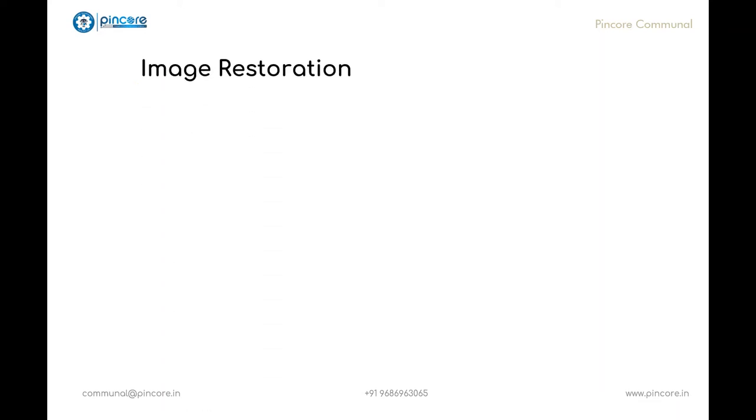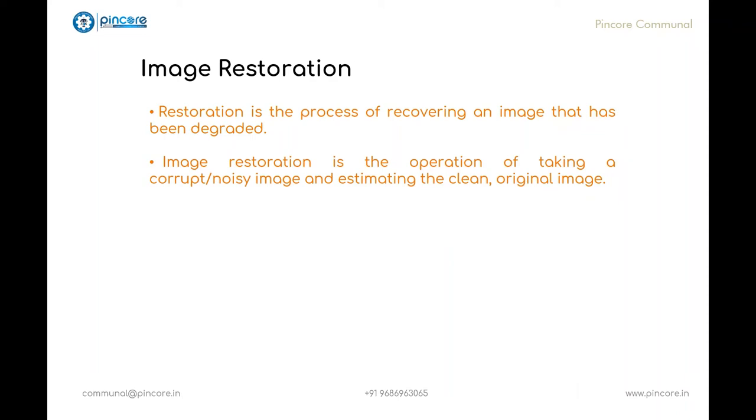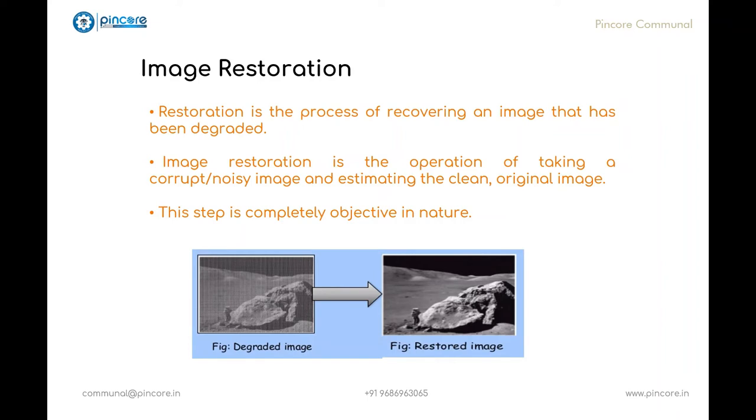The next step in digital image processing is image restoration. It is the process of recovering an image that has been degraded. After identifying the degraded process, it will be reversed. Image restoration is the operation of taking a corrupt or noisy image and estimating the clean original image. Corruption may come in many forms such as motion blur, noise, or it may be also because of the camera misfocus. This step is completely objective in nature, which means that restoration techniques tend to be based on mathematical or probabilistic models of image degradation. Image restoration is performed by reversing the process that blurred the image. It also deals with improving the appearance of the image.